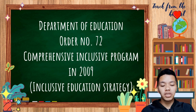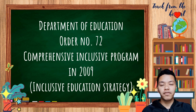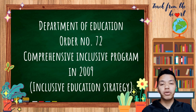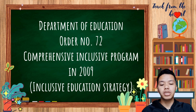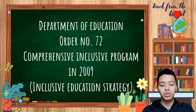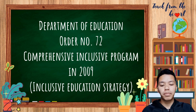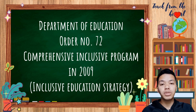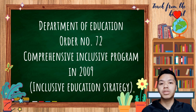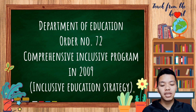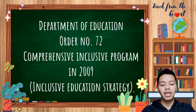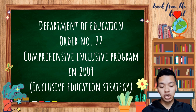The Department of Education in the Philippines, through DepEd Order No. 72, implemented a comprehensive inclusive program in 2009 known as the Inclusive Education Strategy, to increase participation rates for children with disabilities, giftedness, and talents.